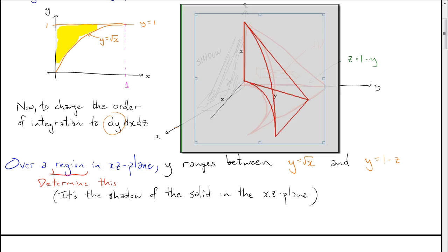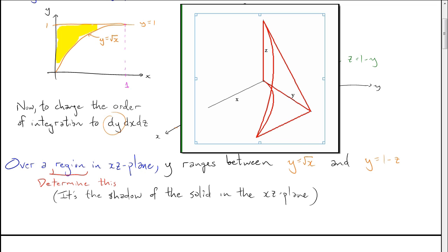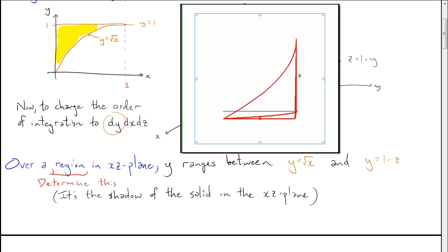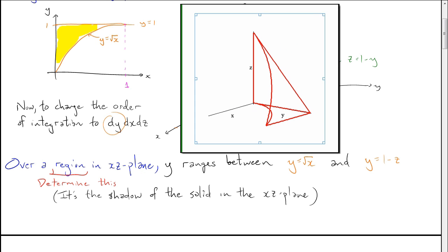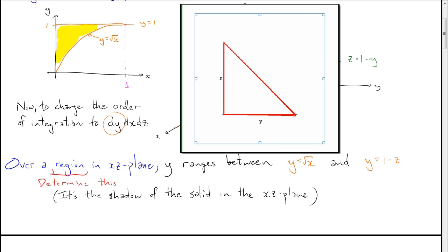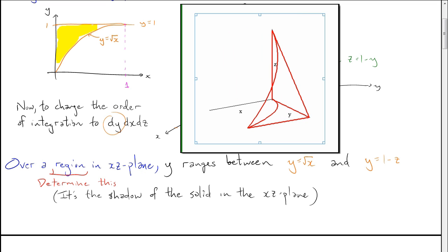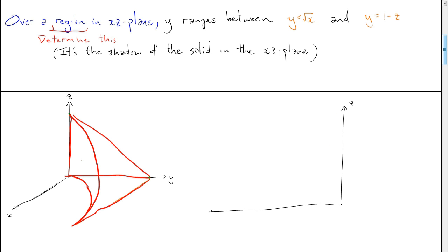Let's sketch the shadow in the xz plane. Rotating the Maple picture, we can see what the projection looks like. We need to describe that region in the xz plane in detail. As a separate exercise, you could also change the order to integrate with respect to x first, which would involve describing the region in the yz plane — a triangle — but that's separate. Our task is the xz plane region.